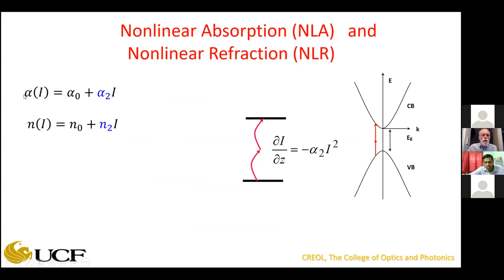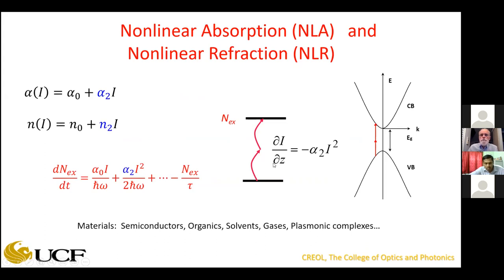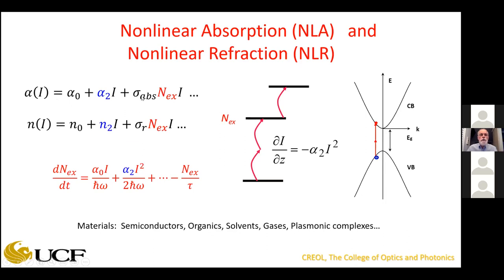Going back to nonlinear absorption: alpha = alpha_0 + alpha_2·I, then alpha_2·I² for three-photon absorption. In semiconductors you create free carriers; in organic materials you create excited states — the equations are actually the same. The generation rate for those carriers, if you don't have linear absorption, would be two-photon-absorption-induced carriers. Taking these equations and solving, you get absorption that depends not only on I but also on the carrier density, which itself has an I in it — so this is a higher-order nonlinearity. The carrier density gives you a refractive cross-section that is negative, and integrating over time gives a higher-order dependence.